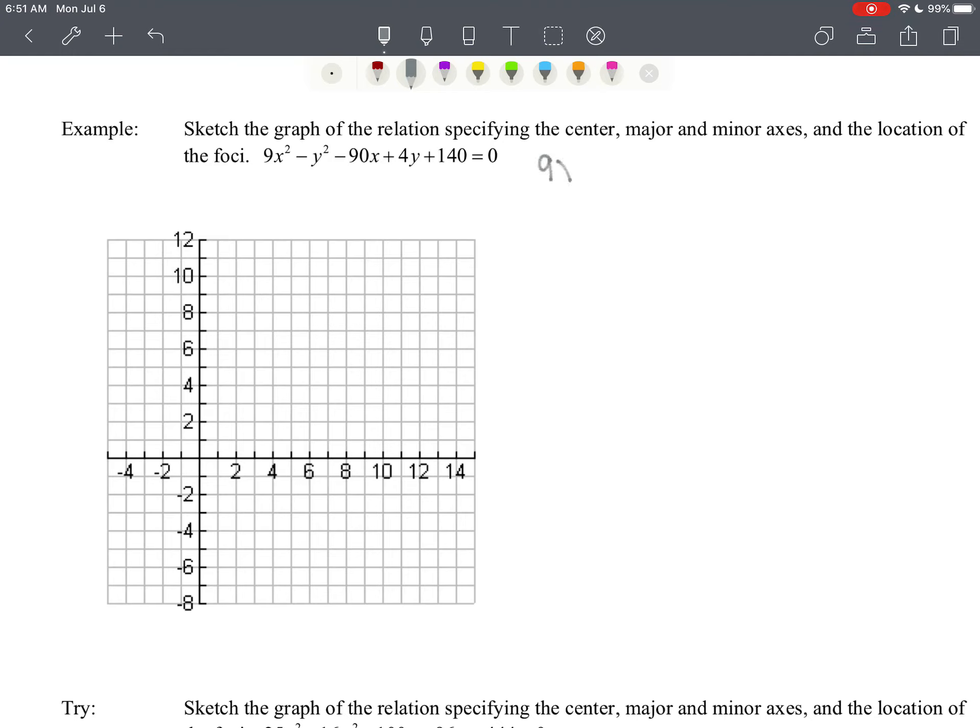So we are going to reorganize so that we can complete the square. I'm going to go a little bit more quickly through this. 9 times the quantity x squared minus 10x, and I'm going to complete that square. I'm going to factor out the negative, so I've got y squared minus 4y, and then we'll complete that square, equals negative 140.